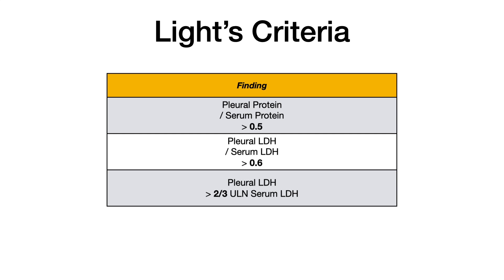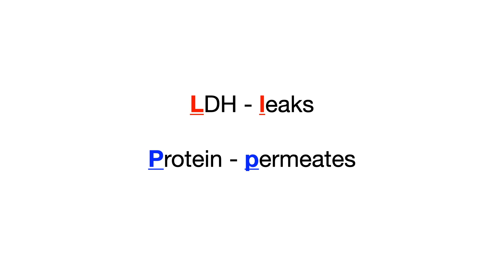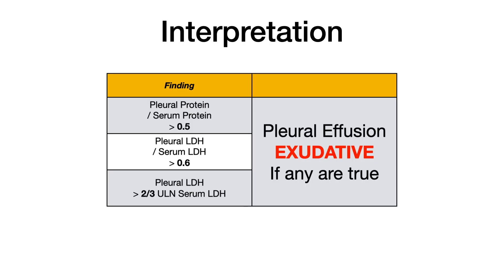To help you simplify this and understand the difference between exudate and transudate conceptually: LDH leaks and protein permeates. Normally, LDH is tightly compacted into cells and protein does not freely permeate across barriers. But when cells break in disease processes that cause exudative pleural effusions, LDH leaks and protein permeates. If any one of these three Light's criteria are positive, you have an exudative pleural effusion. On USMLE and Comlex, if you have high pleural protein or high pleural LDH, chances are you're looking at an exudative pleural effusion. The specific criteria are shown here and are much more useful on Step 2, Level 2, shelves, and rotations — but this can show up on Step 1, and certainly the difference between exudative and transudative shows up all the time.